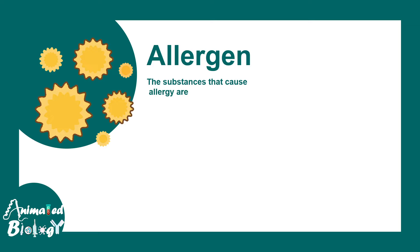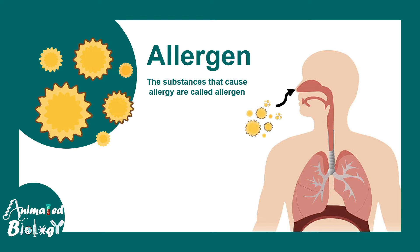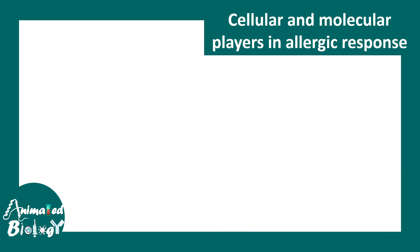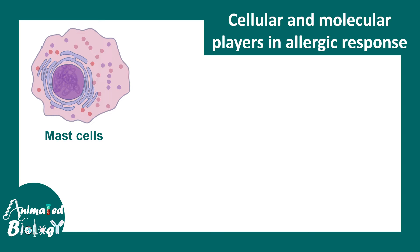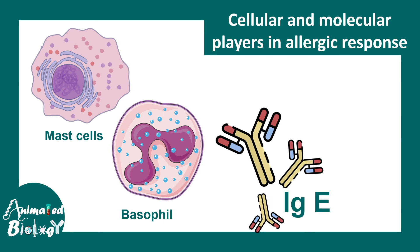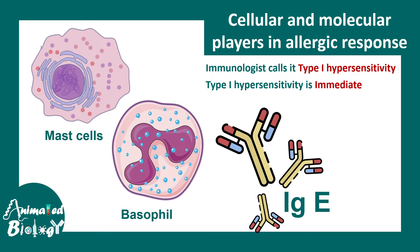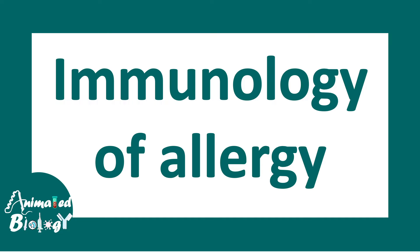So allergens are substances that can cause allergy. Let's say the allergen is a pollen grain, and you inhale the pollen grain via your nostrils. The cellular and molecular players which lead to these allergic responses are mast cells, basophils, and IgE antibodies secreted by plasma cells. Allergies are also known as type 1 hypersensitivity, and the onset of these reactions is pretty much immediate — in the order of minutes.